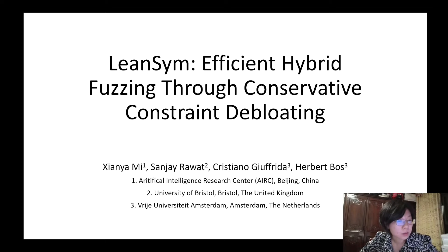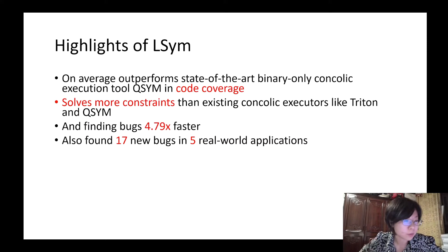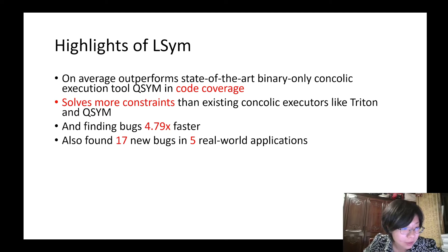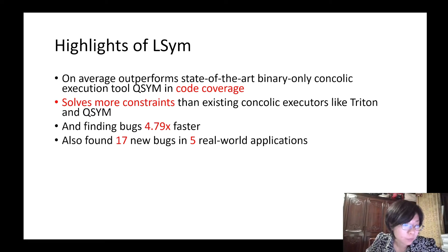The highlights of our work Linsim are that, on average, it outperforms a state-of-the-art binary-only concolic execution tool, QSIM, in code coverage, and solves more constraints than existing concolic executors like Triton and QSIM. Linsim also finds bugs much faster than QSIM, and finds 17 new bugs in 5 real-world applications.